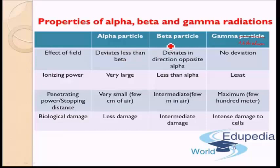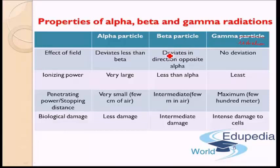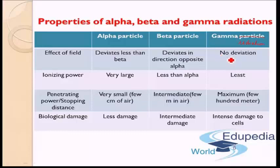Beta particles, on the other hand, are negatively charged particles and move in the opposite direction — they are attracted towards the positive terminal of a battery or electric field, and move in the direction expected for a negative particle in a magnetic field. Since beta particles are quite light, they deviate much more than alpha particles, and their deviation is opposite to that of alpha particles because their charge is opposite. Finally, gamma radiations, being uncharged, show no deviation in either electric or magnetic field.